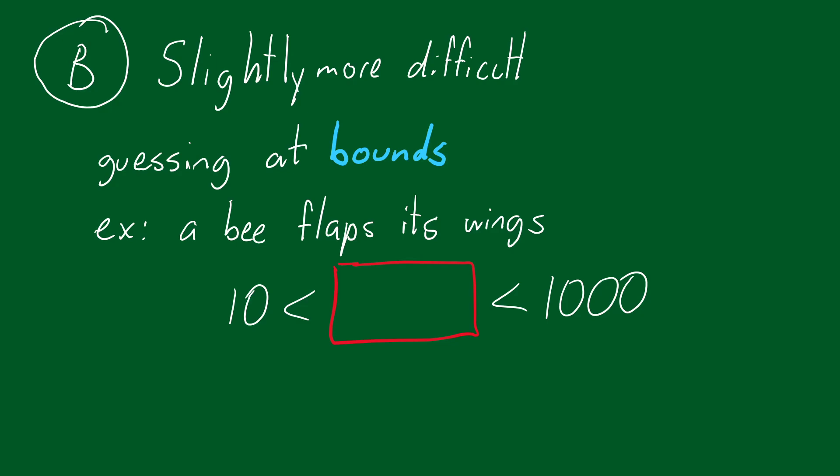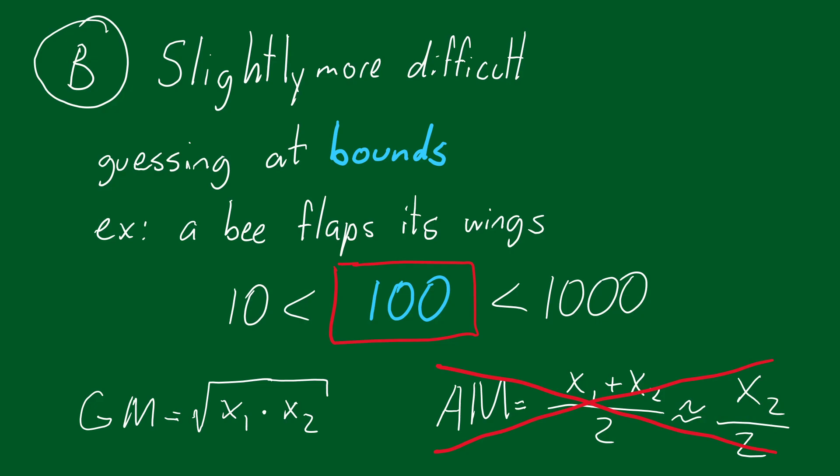Combining our lower and upper bound, we can guess that, within an order of magnitude, a bee flaps its wings 100 times a second. As an aside, notice that we use the geometric, rather than the arithmetic mean, of the two bounds, preserving the focus on the magnitude of the answer, and giving the lower bound as much impact as the upper one.